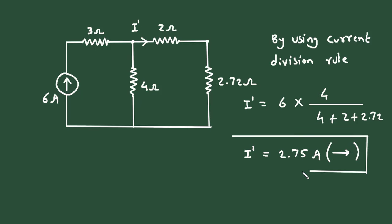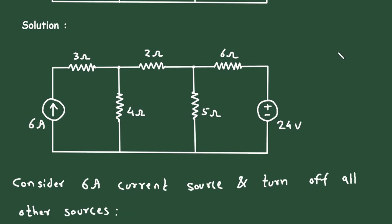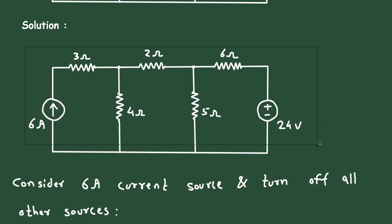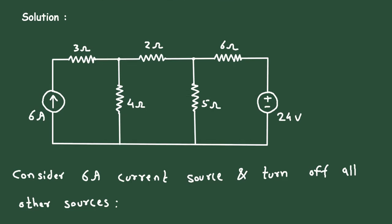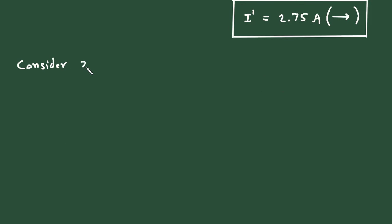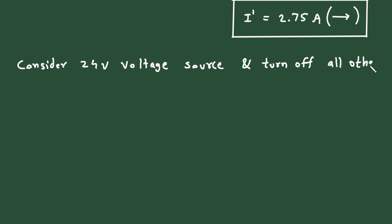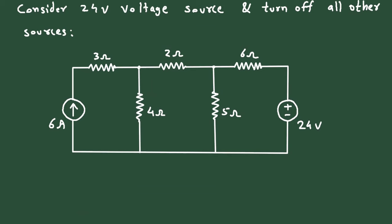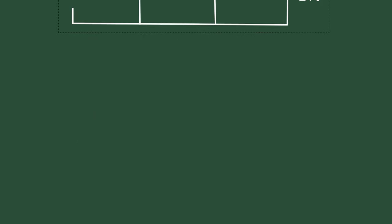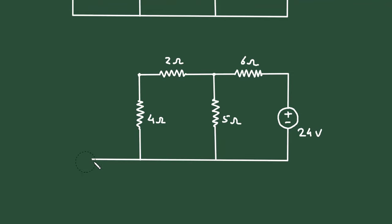Now next, we will find the current caused by this 24 volt voltage source, and that will be our I double prime. So the second step is to consider the 24 volt voltage source and turn off all other sources. Now when we turn off this current source, that time this will be an open circuit. When this is an open circuit, this resistor will be removed, and we have to find this current, which will be I double prime.